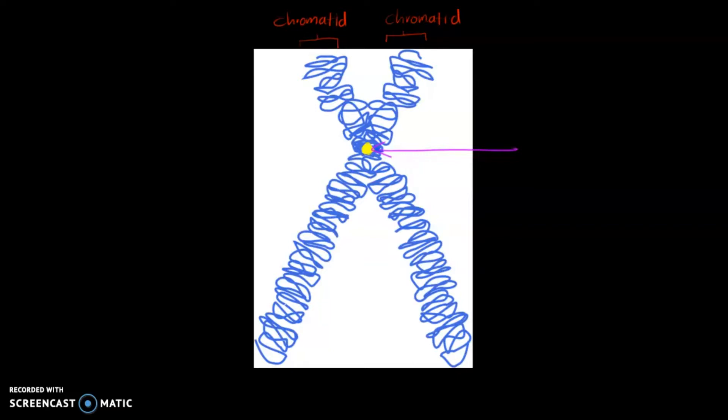It can be easily identified because the whole region appears as if it's being pinched towards something. In this case, it's being pinched onto these two sister chromatids. This region is called the centromere.